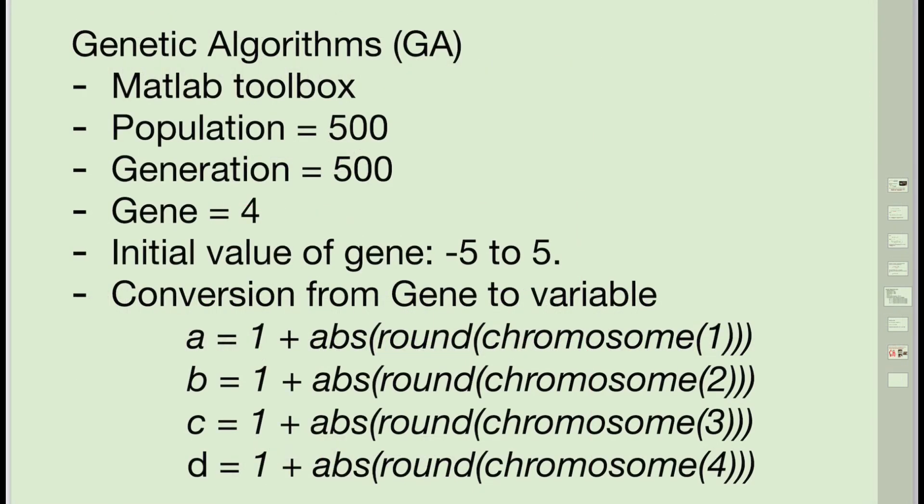Let's see the settings of genetic algorithms. Here we use MATLAB toolbox. We set the population equals 500 - we have 500 chromosomes in the population. We set the generation to be 500, which means it will run 500 cycles. Each chromosome has four genes, which correspond to a, b, c, and d, the four variables. For simplicity, we initiate the gene values from -5 to +5.